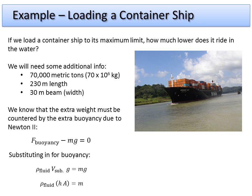We go one step further: we eliminate the factors of G, and we convert our volume to an area and a height. We want to know how far down in the fluid we submerge — we're looking for H — and we have the dimensions up here that give us the area of our ship.